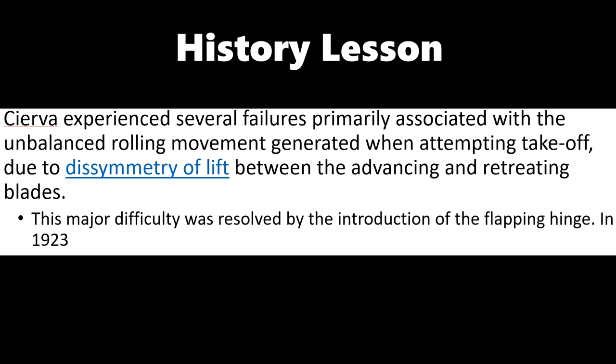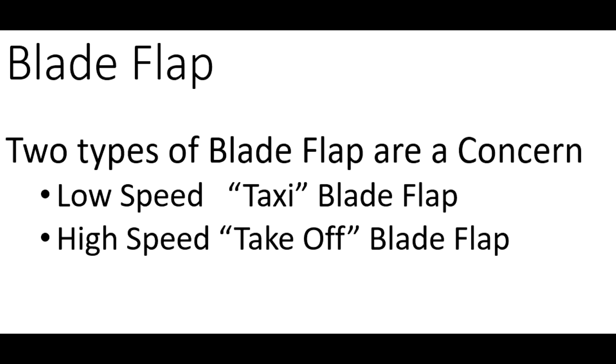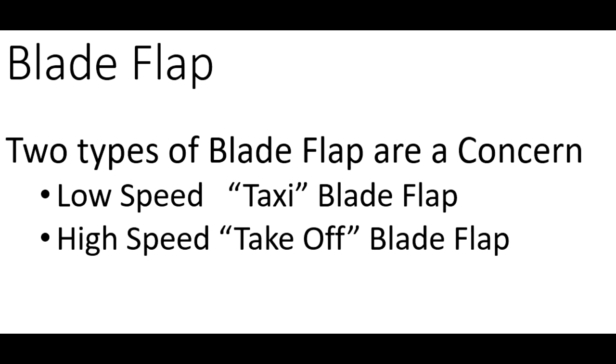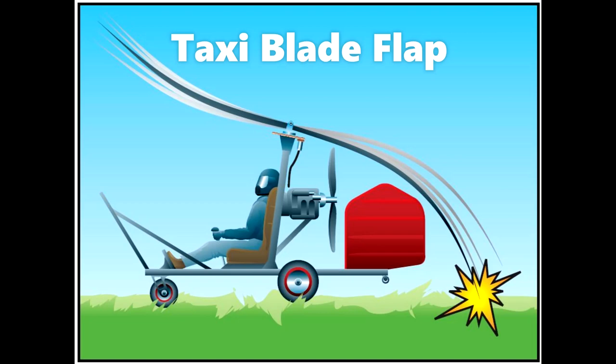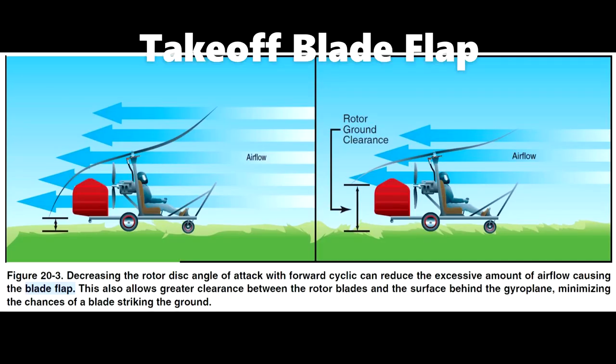Cierva taught us what happens when we have a rigid rotor and try to take off in a gyroplane — the gyroplane rolls over and we have an accident. There are generally two conditions where a gyroplane pilot may experience blade flap: the first is when taxiing, typically after landing when the pilot is slowing the rotor blades but the gyroplane is still moving; the second is the pilot having insufficient rotor RPM and taking off.